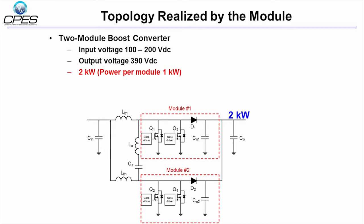The module processes 1kW per each, and the total power becomes 2kW. The LC tank guarantees the zero-voltage switching of all switches.